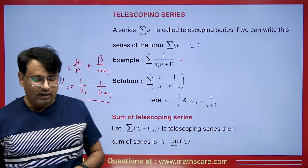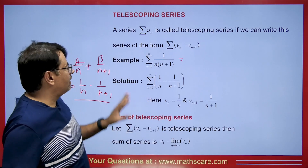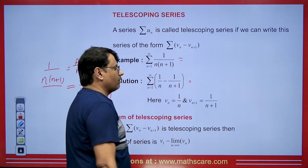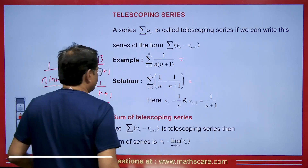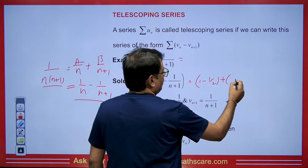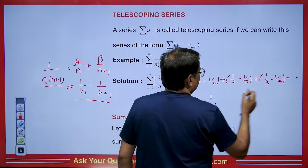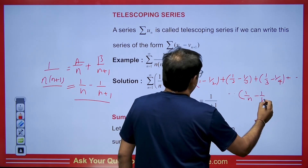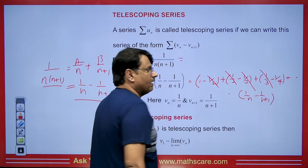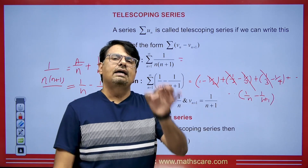Now you might wonder what makes the telescoping series so important. If we need to find the sum, putting n = 1 gives 1 − 1/2, putting n = 2 gives 1/2 − 1/3, putting n = 3 gives 1/3 − 1/4, and so on up to 1/n − 1/(n+1). You can see the 1/2 terms cancel, the 1/3 terms cancel, and all the middle terms cancel out, leaving only the first and last terms.